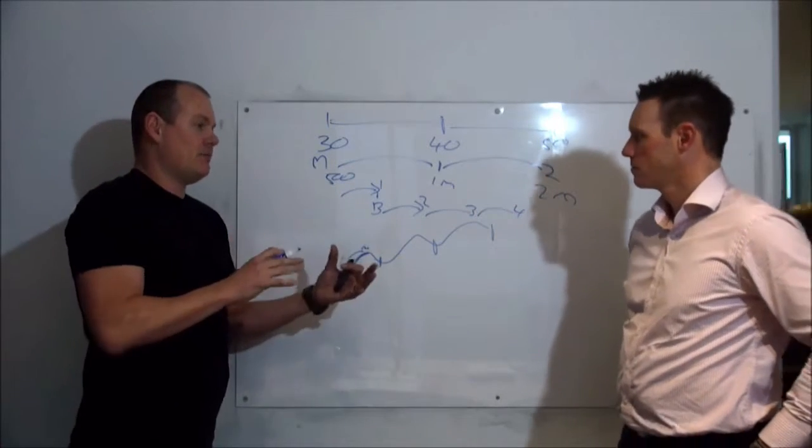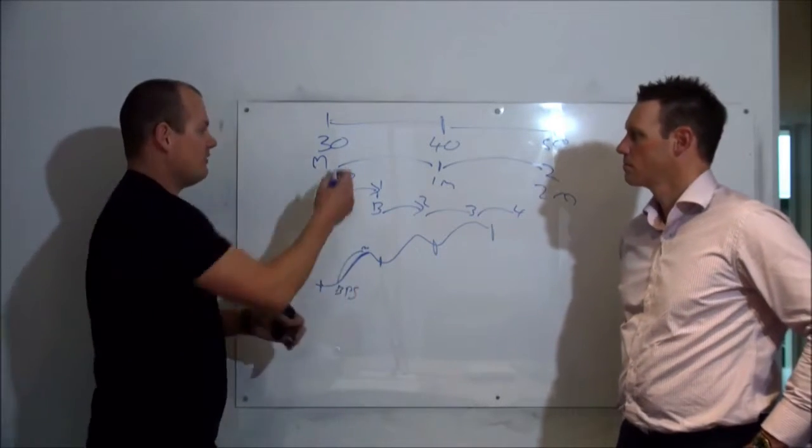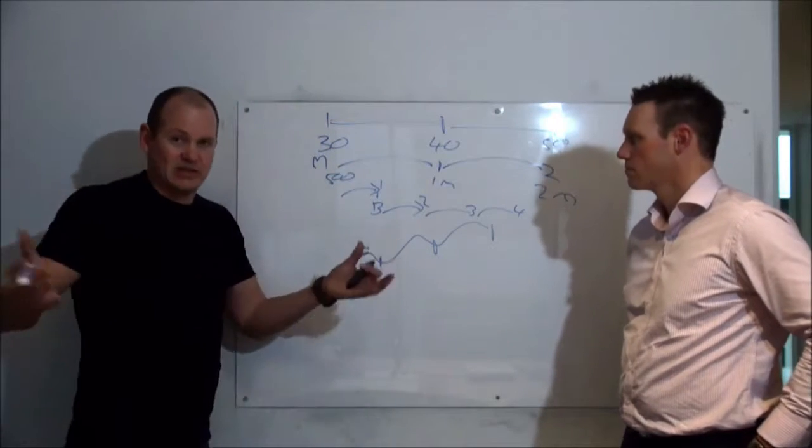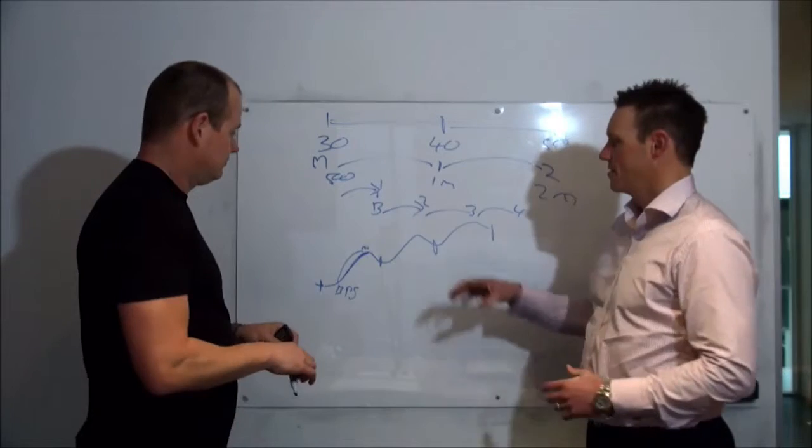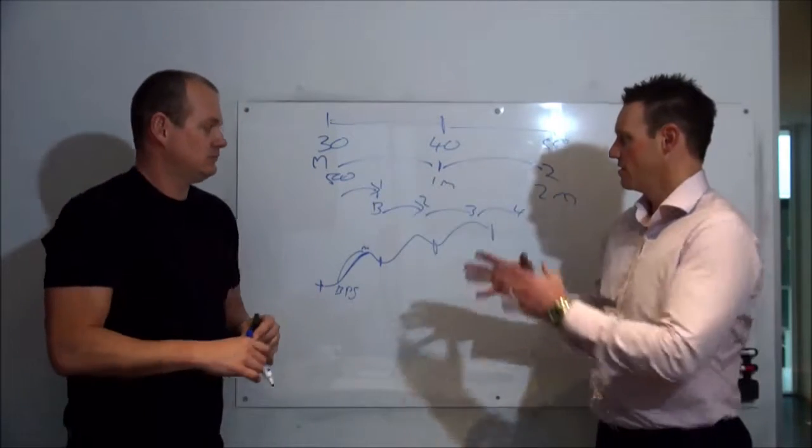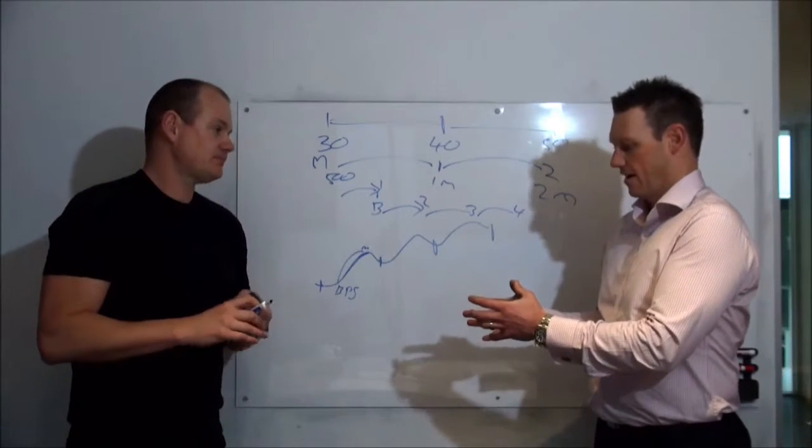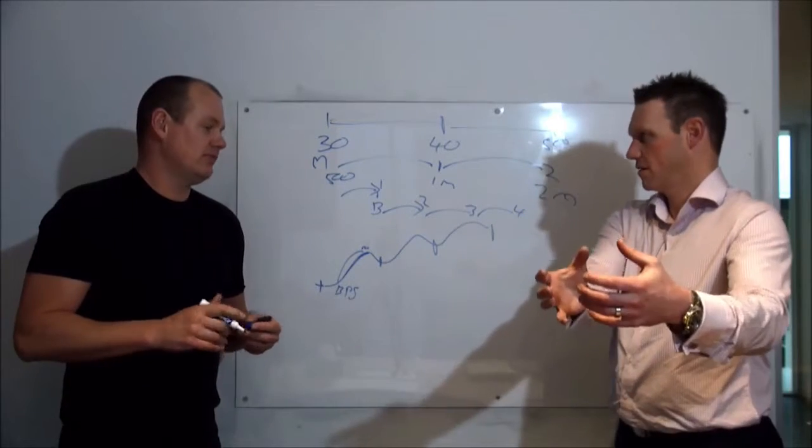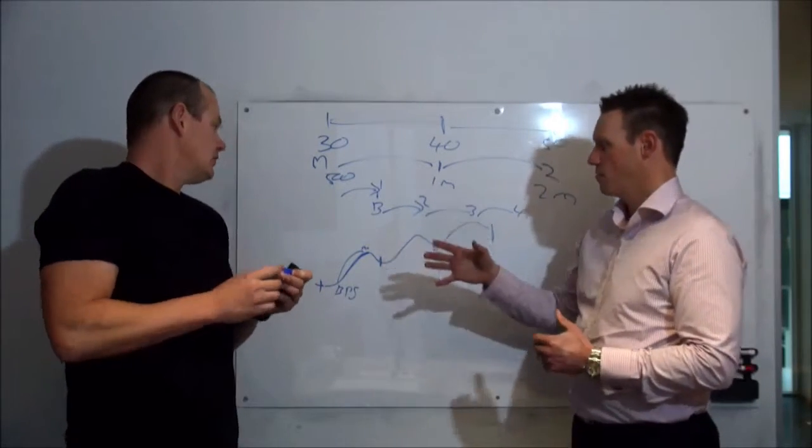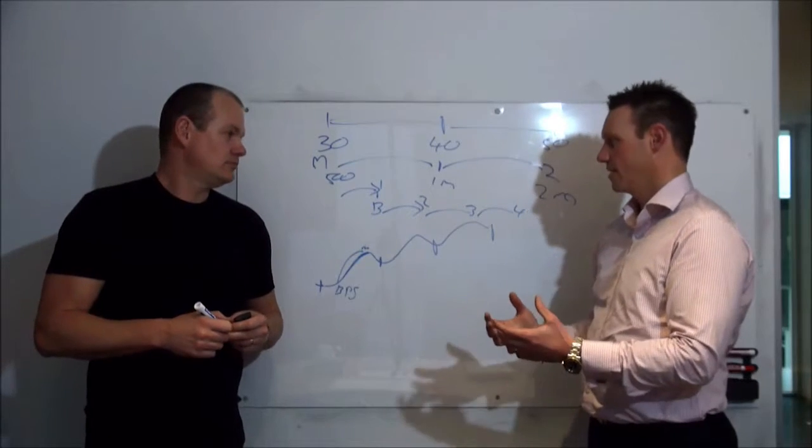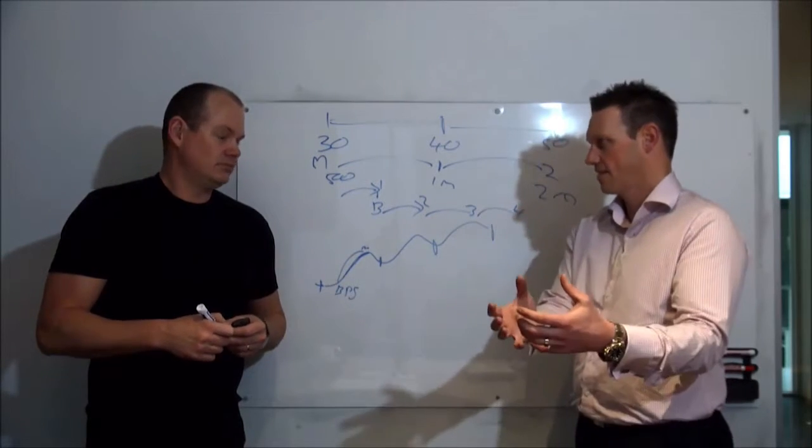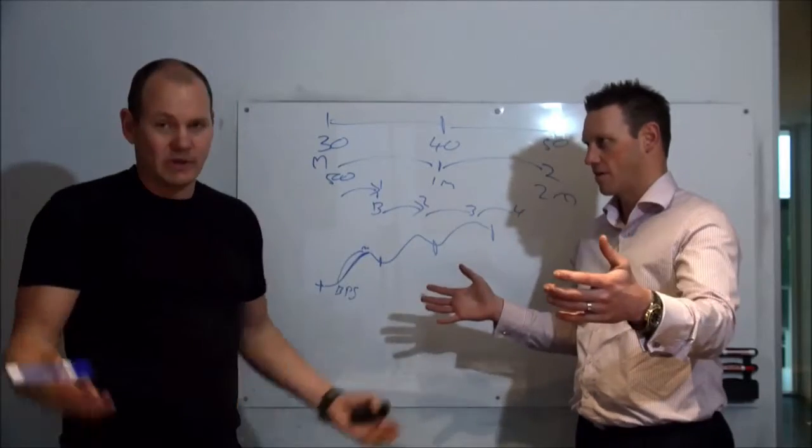So basically, what we're trying to do is compound the amount of growth cycles that we can have over your 20, 30-year investment journey. So instead of having all of your properties in one capital city that get two lots of growth cycles in a 20-year period, if you can spread your portfolio across three capital cities or four capital cities, then you're essentially getting six or eight lots of growth cycles in the same timeframe. Much better.